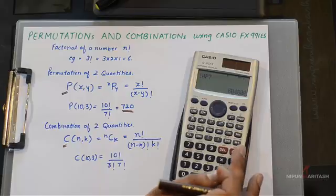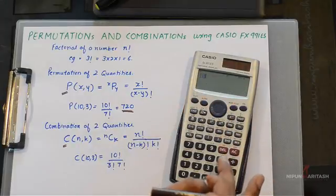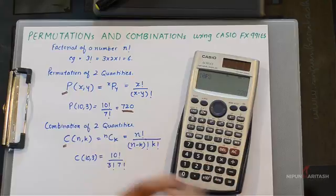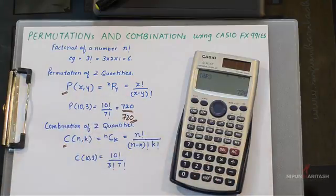This is 10 permutation 3. So I write down 10 permutation 3, it gives me 720 as the answer. So both ways you get the same answer.